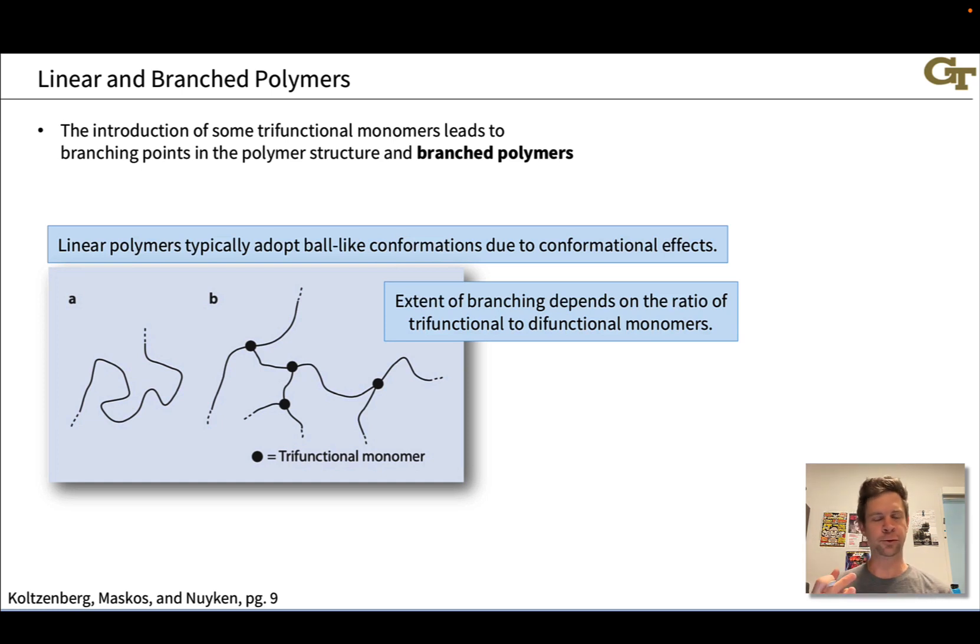If we introduce during the polymerization process a monomer that has three functional groups that can polymerize—say we're doing a polymerization where an alcohol and carboxylic acid come together to create the linking units between monomers, and we introduce a tricarboxylic acid into that mix—we end up with branched polymers. The branching points are these trifunctional monomers with three functional groups, each of which can react to create an extended chain. This leads to what's called a branched polymer with branching in the polymer architecture.